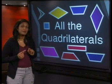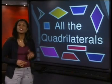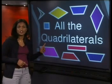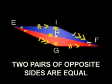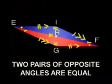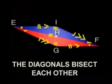We moved from the rectangle to the parallelogram. Two pairs of opposite sides are equal. Two pairs of opposite sides are parallel. Two pairs of opposite angles are equal. And the diagonals bisect each other.